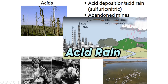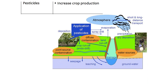Acid rain is a problem we talked about in the last unit. It happens in the atmosphere but gets into the water, causing more acidic water. Pesticides are great because they can increase crop production, but the problem is those pesticides can run off into water sources.